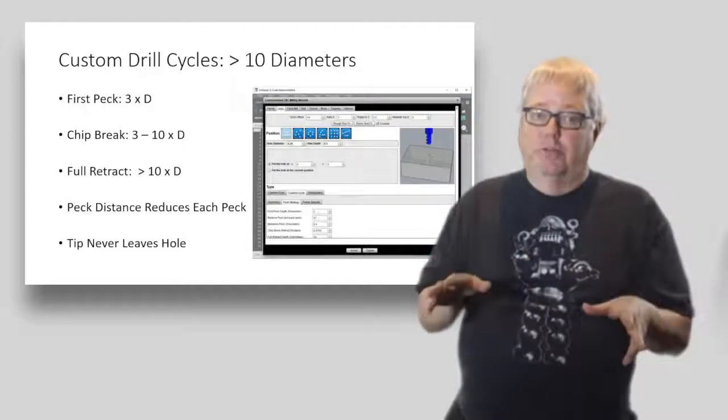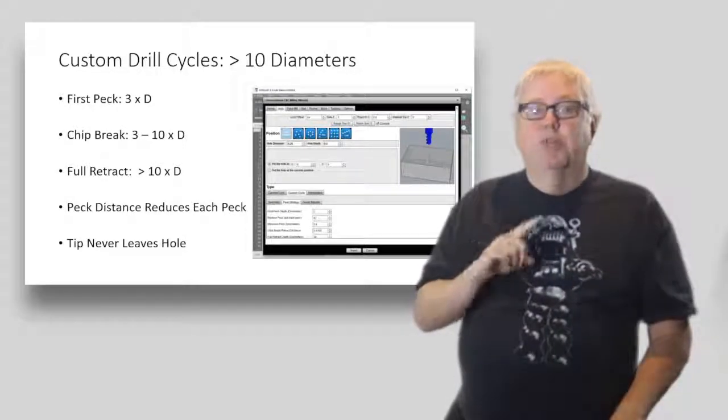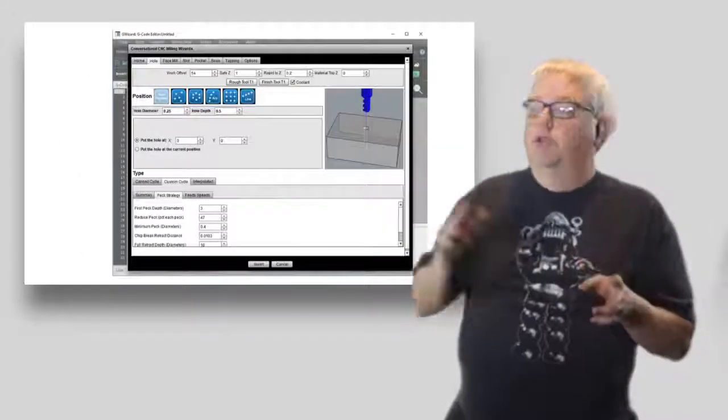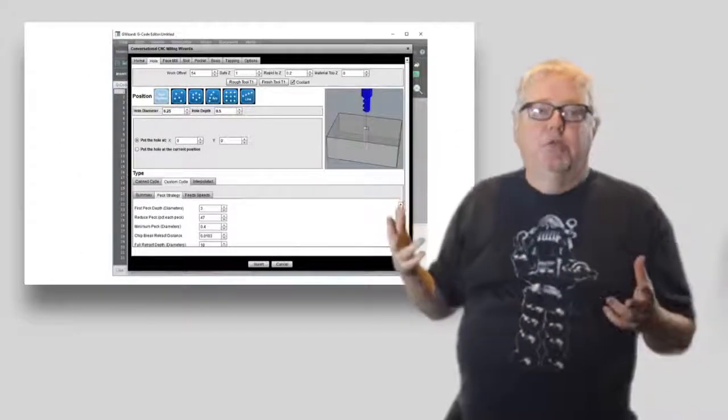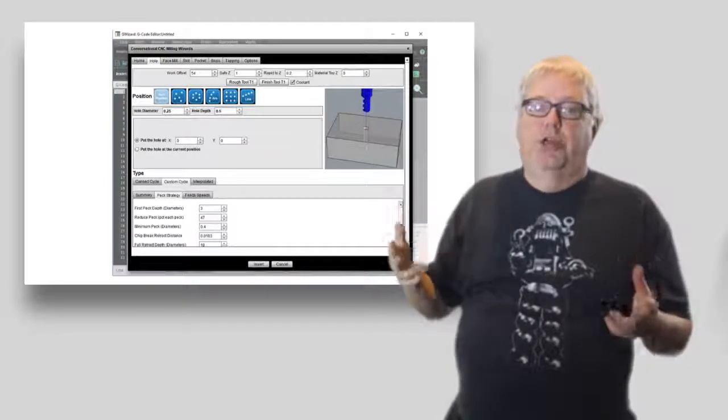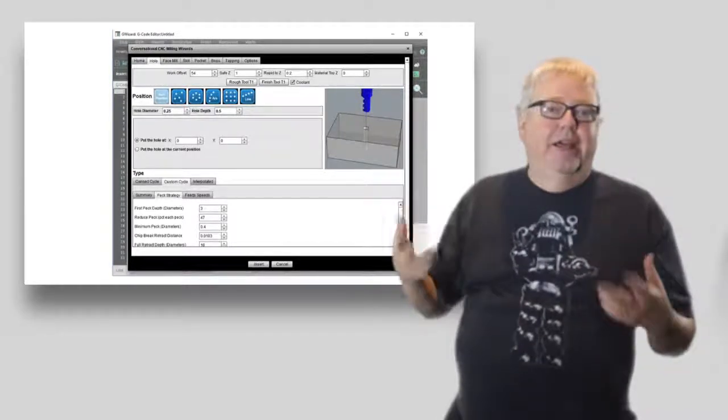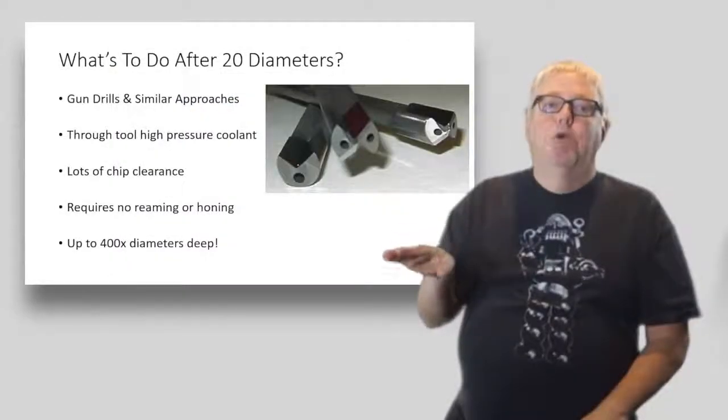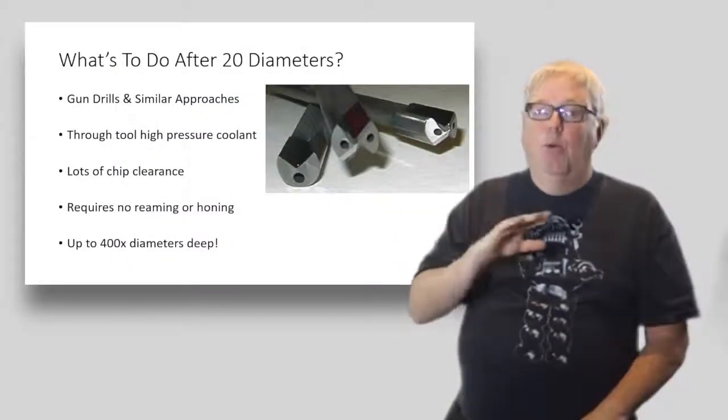You do each thing just enough to get the job done, and the end result can save you a lot of cycle time if you have a lot of deep holes to drill. You can program a custom cycle yourself or use a conversational programming wizard like the one I have pictured here. That particular wizard is from my G-Wizard Editor, a G-code editor and simulator.